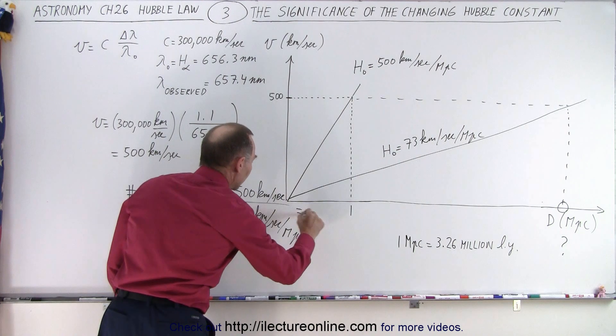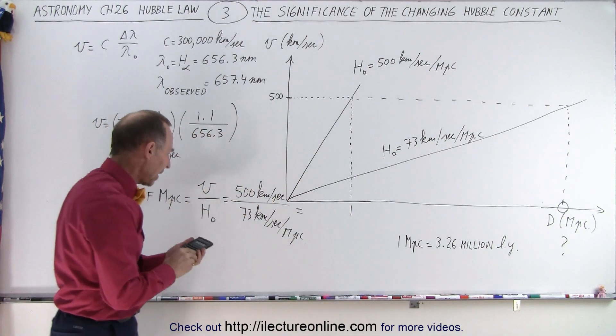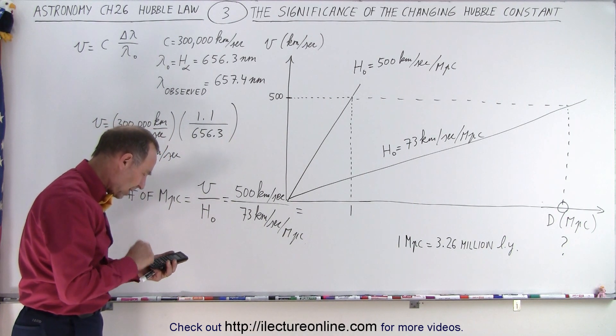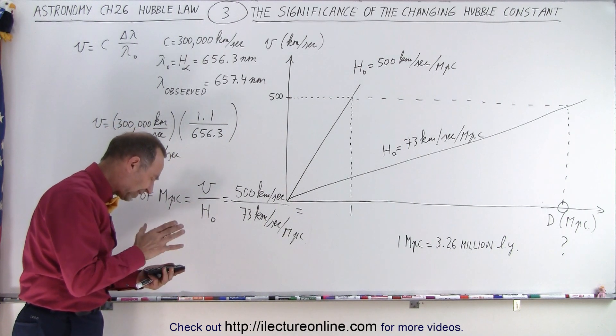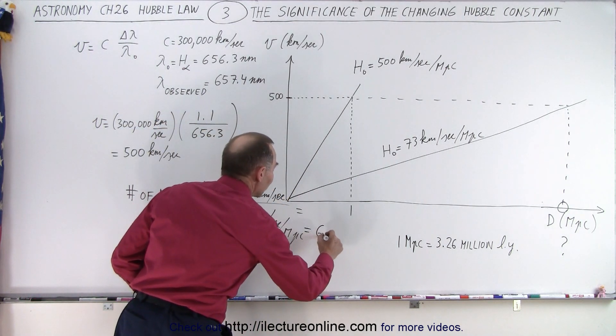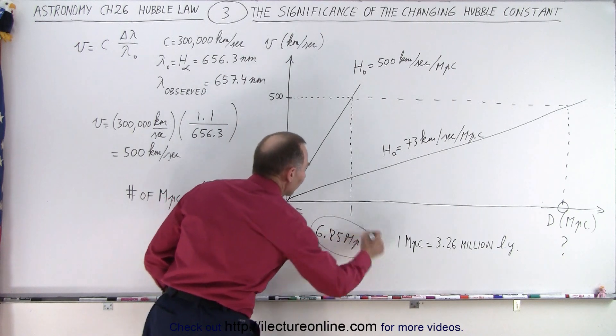And so what would be the new distance estimated based upon that? So now we take 500 divided by 73 and now it comes out to be about 6.85. So that would be equal to 6.85 megaparsec. Notice the difference.